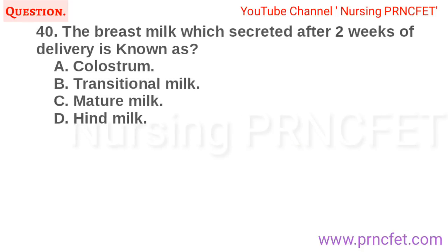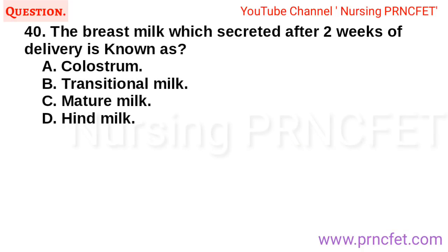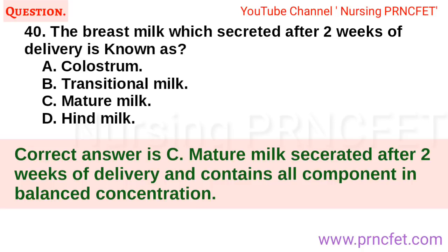Question 40: The breast milk which is secreted after two weeks of delivery is known as: A. Colostrum. B. Transitional milk. C. Mature milk. D. Hind milk. Correct answer is C. Mature milk is secreted after two weeks of delivery and contains all components in balanced concentration.